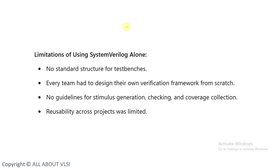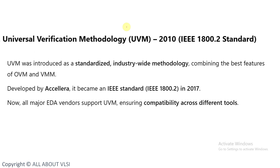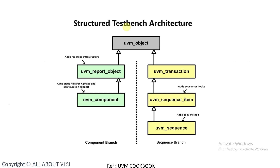The limitations of SystemVerilog were: no standard structure for test benches, every team had to design their own verification framework from scratch, no guidelines for stimulus generation, checking and coverage collection, and reusability across projects was limited. UVM was then introduced as a standardized industry-wide methodology combining the best features of OVM and VMM. It was developed by Accellera, became an IEEE standard in 2017, and now all major EDA vendors support UVM, ensuring compatibility across different tools.